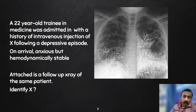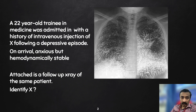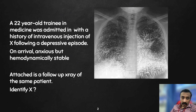Here we have a 22-year-old trainee in medicine who was admitted with a history of intravenous injection of a substance following a depressive episode. On arrival he was found to be anxious but hemodynamically stable at the ER. This X-ray was taken a few days later of the same patient. So what could this be?